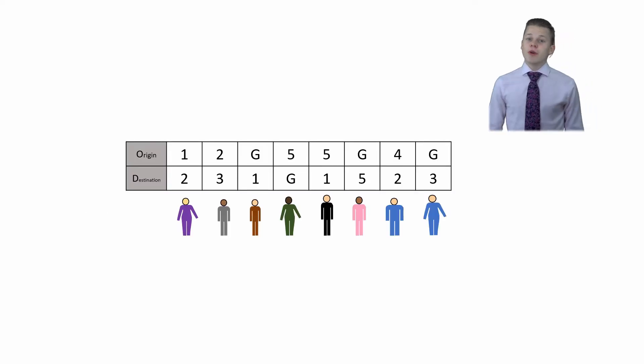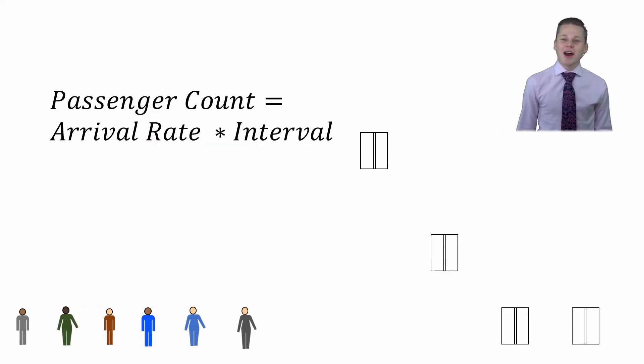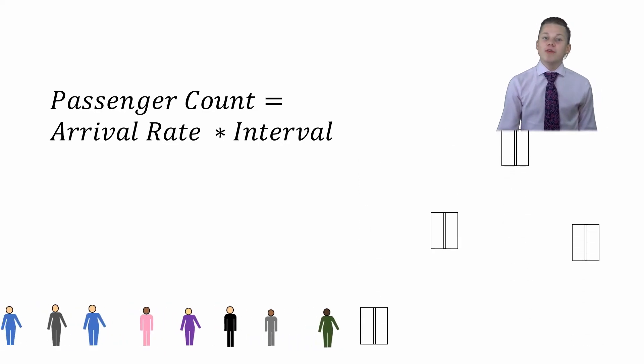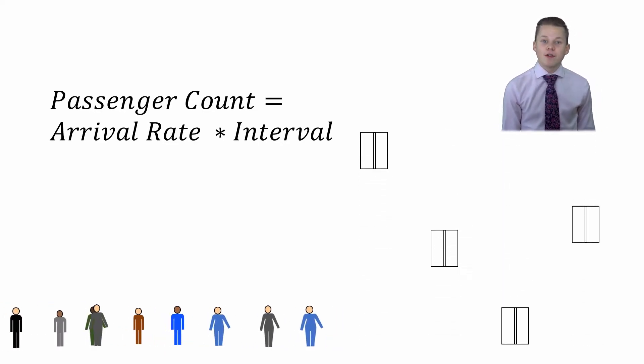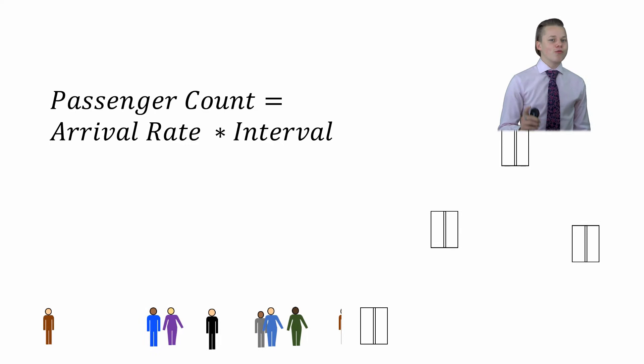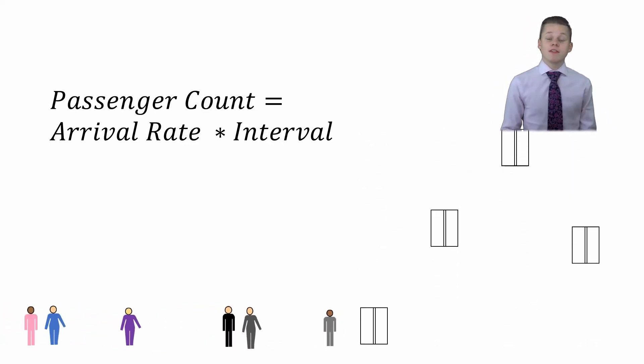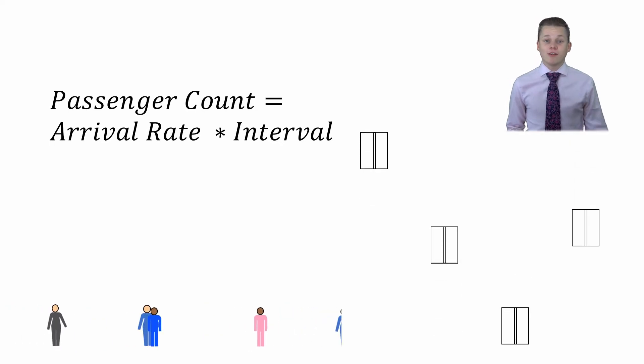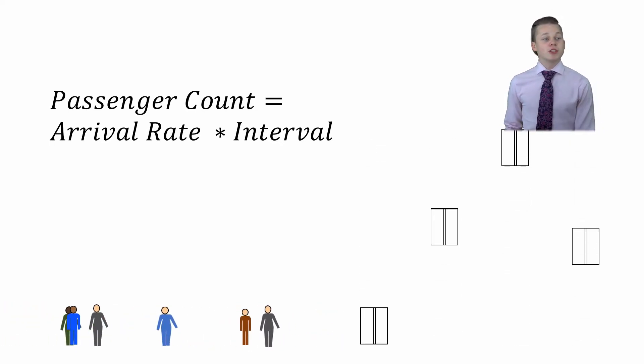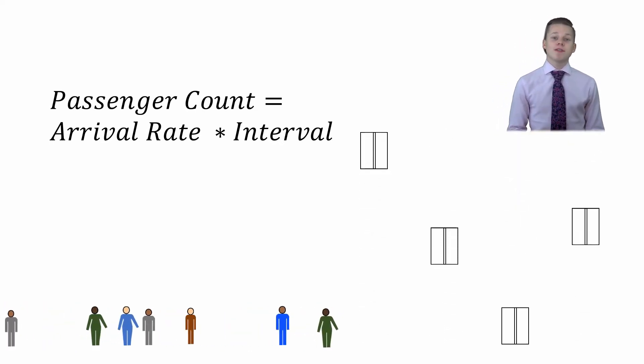For that last demonstration we had eight passengers. So how did I know that our system would have eight passengers? I didn't. I made it up. For demonstration purposes I picked a random number. Unfortunately that's not how reality works. We don't know the number of people waiting to get on the lift. We do know the number of people arriving at the lift per second. We call that the arrival rate. This is a standard input that designers have access to.